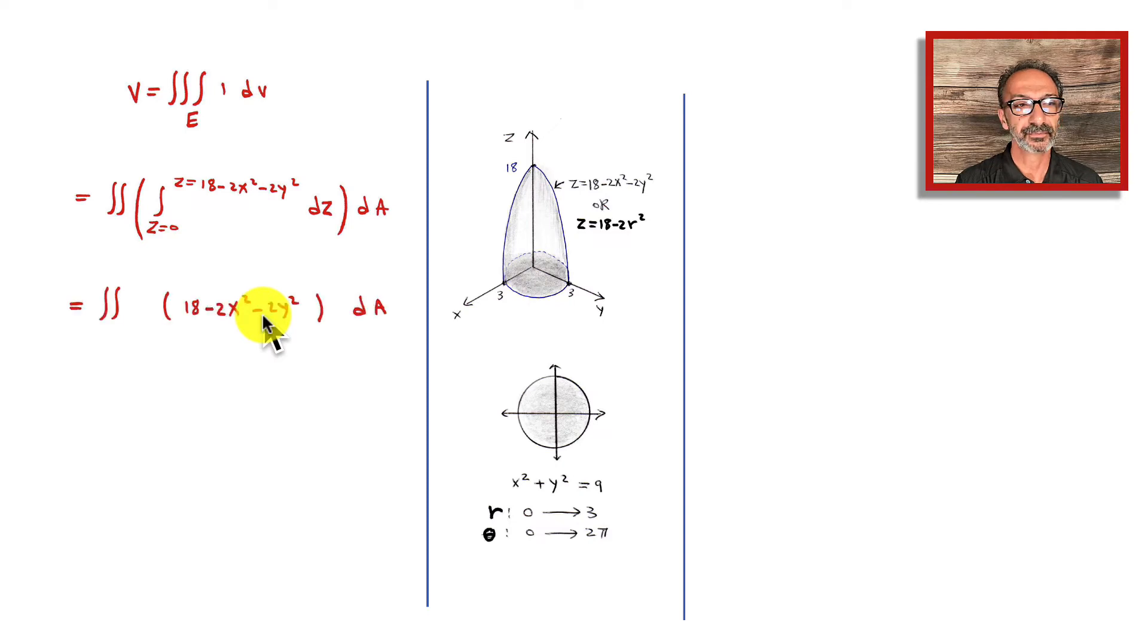Since this is 1 inside, the integration will be z. When you do the substitution of the upper bound and lower bound, z equals 0 is not going to do anything, so we plug in 18 minus 2x squared minus 2y squared. Now we are down to double integration, so this whole integration is just 18 minus 2x squared minus 2y squared.